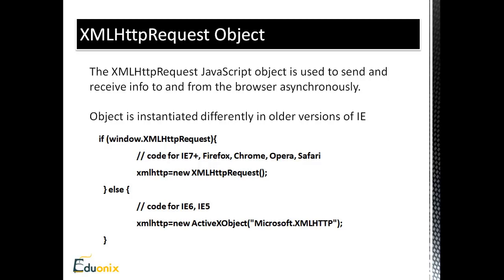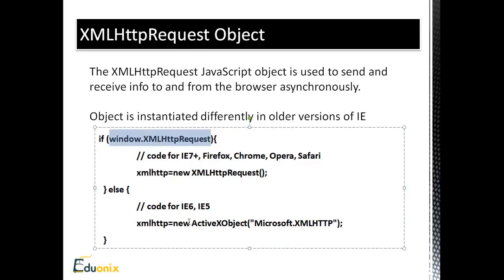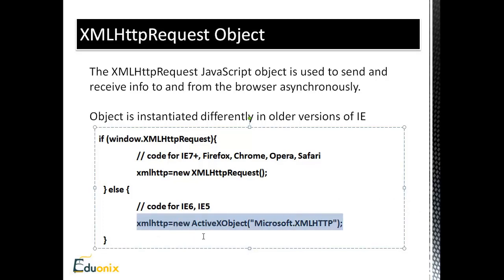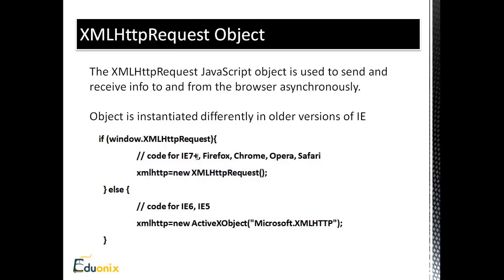The XMLHttpRequest object is a JavaScript object used to send and receive info. The object is instantiated differently in older versions of IE. So this is the beginning of an AJAX program — we have a conditional: if window.XMLHttpRequest, this works for IE7 plus and all other browsers. Then we have an else statement, because if that isn't true it means we're in IE6 or earlier, and in that case we use an ActiveX object. We have to include this code in our AJAX script.